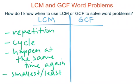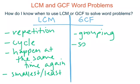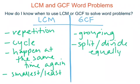Moving over to greatest common factor — because we're looking at factors, if we think back to using the nines method, we're using the process of division. Division is splitting things up. So the first thing we want to look for is if we're grouping things, or splitting or dividing things equally. The keyword here is 'equally.'